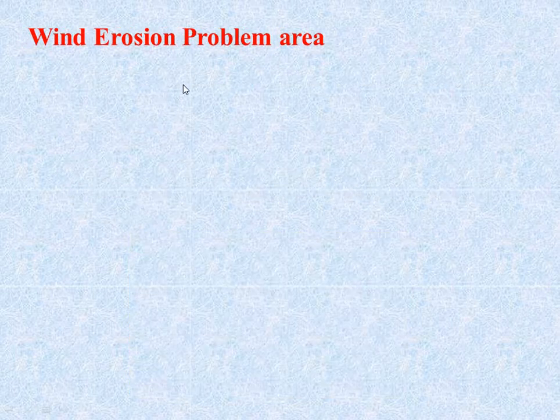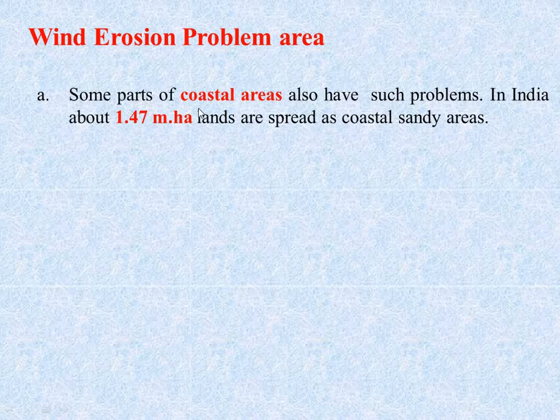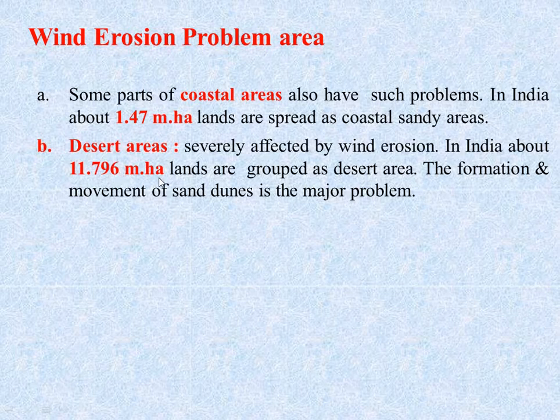Coming to wind erosion problem areas, first is coastal areas. In India, about 1.47 million hectare lands are coastal sandy areas. Desert areas are severely affected by wind erosion. About 11.796 million hectare lands are grouped as desert area. The formation and movement of sand dunes is the major problem.